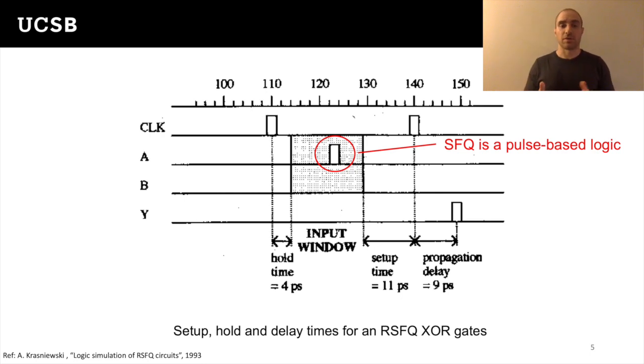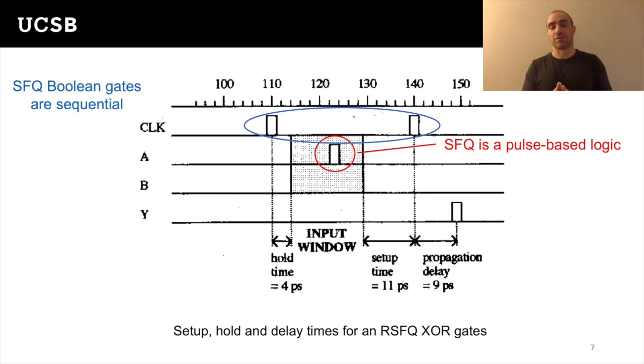For example, here we can see the case of an XOR gate. The arrival of an input pulse within a time window, as that defined by two successive clock pulses, has the meaning of the binary value one, while the absence of the pulse during this period is understood as the binary value zero. Obviously, the notion of a clock period is critical for this concept, but it also creates a number of significant implications, as now every gate is sequential rather than combinational, which is what we know in the CMOS world.